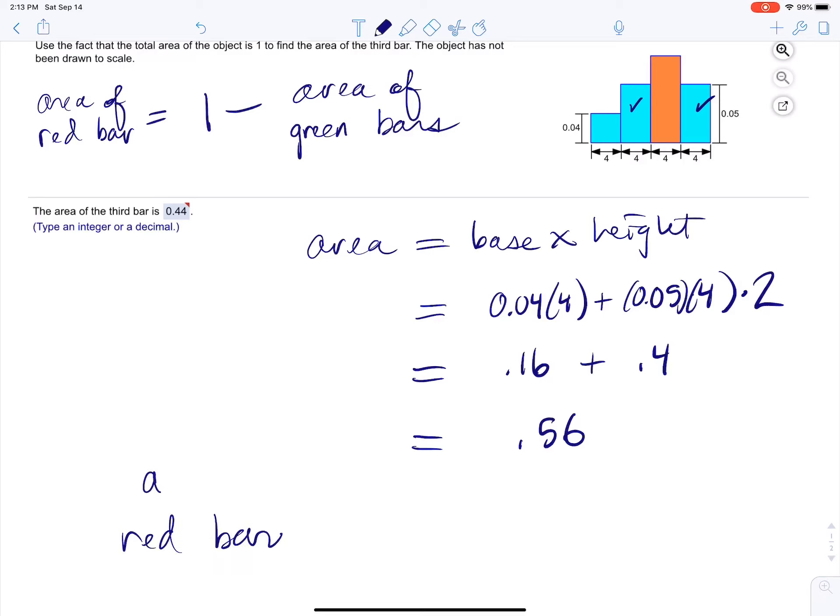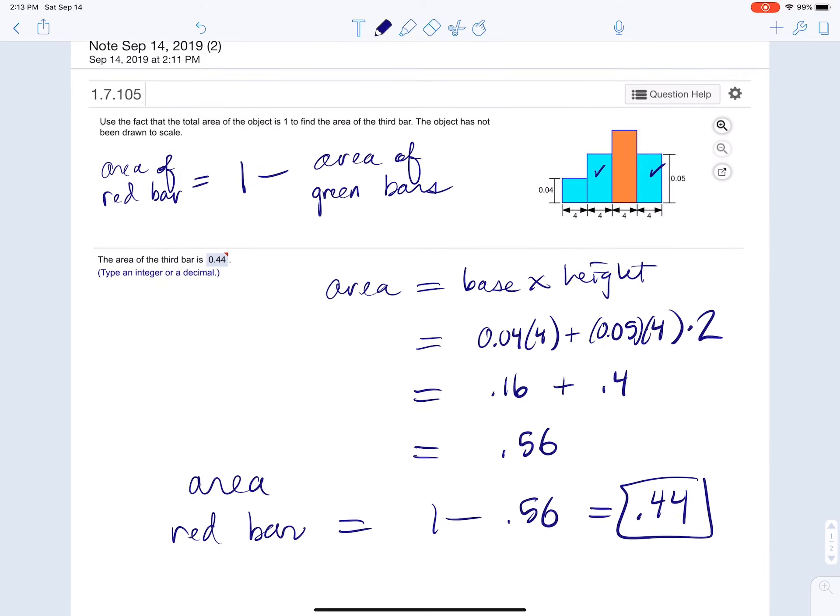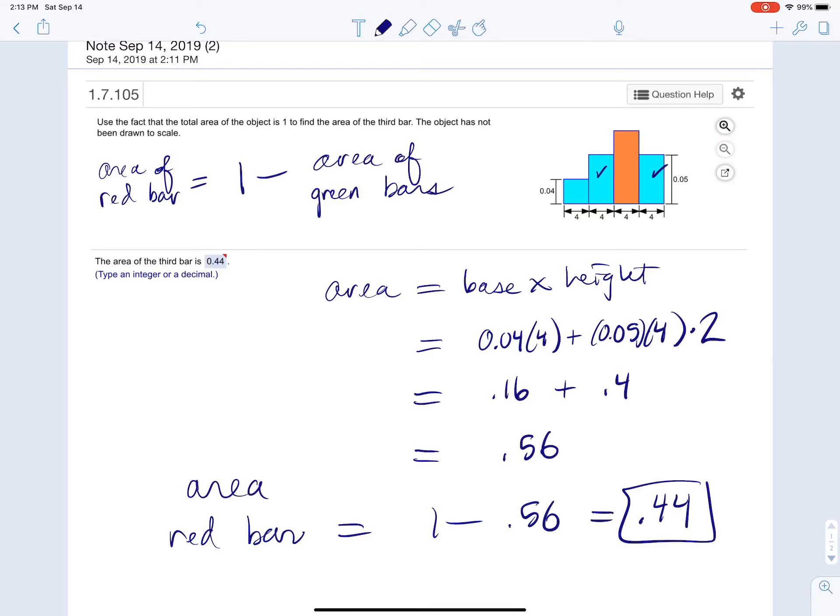So the area of the red bar, the red bar area, is going to be equal to 1 minus 0.56, which equals 0.44. And that's how you do it, assuming all my math is correct there. Did that in my head, but that's the process you got to do the complement.